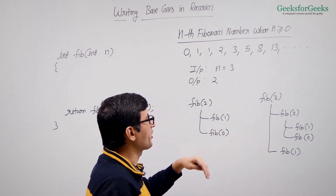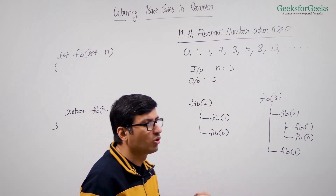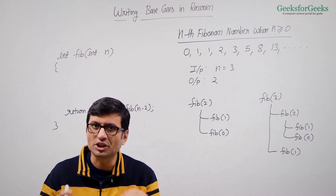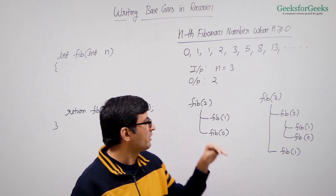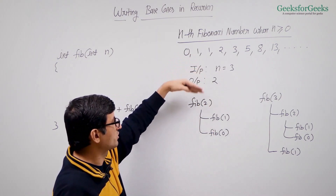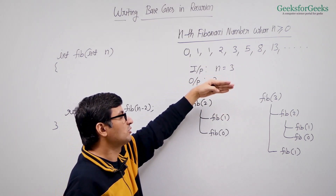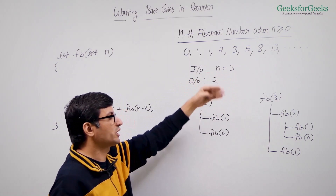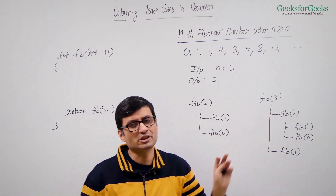If you draw the recursion tree for Fibonacci(4), it first calls Fibonacci(3) then Fibonacci(2), so higher recursive calls are also handled. Fibonacci(4) calls 3 and 2; Fibonacci(5) calls 4 and 3. So all those are handled if we handle just these two simple base cases.